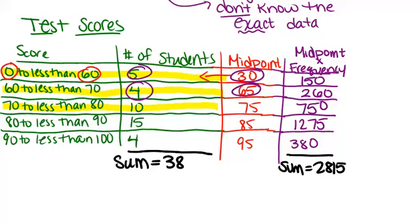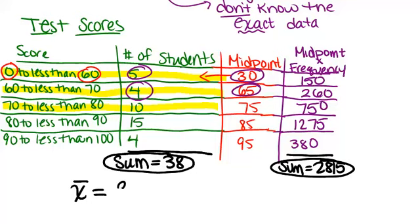So now to find the average or the mean, what we do is take this sum, the sum of the products of midpoint and frequencies, and divide it by the total number of students in our sample. And we get approximately 76.1. So in this case, we would say the mean test score was 76.1 for this sample.